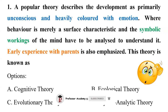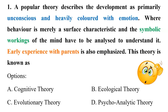Question one: A popular theory describes development as primarily unconscious and heavily colored with emotions, where behavior is merely a surface characteristic and the symbolic working of the mind has to be analyzed to understand it. Early experience with parents is also emphasized. This theory is known as — the given options are: A) cognitive theory, B) ecological theory, C) evolutionary theory, D) psychoanalytic theory.